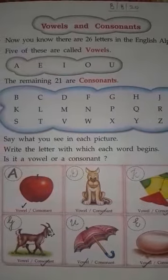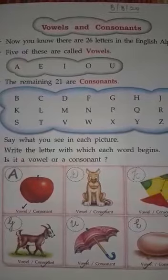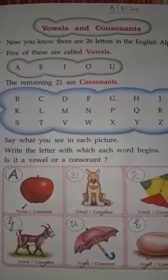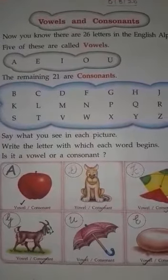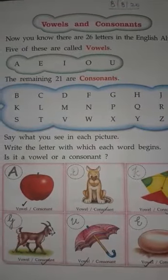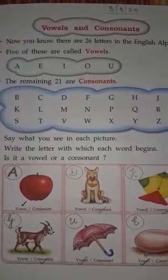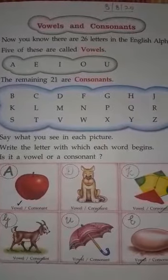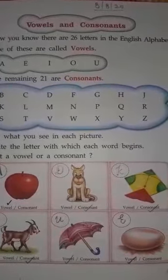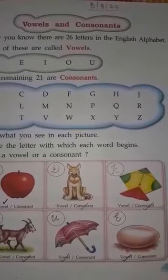Our today's topic is vowels and consonants. Now you know there are 26 letters in the English alphabet.